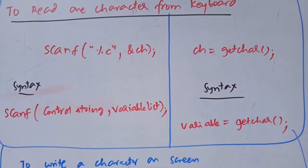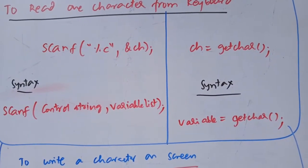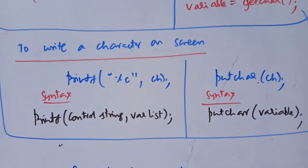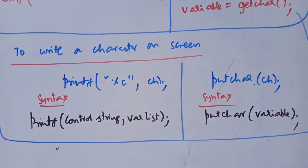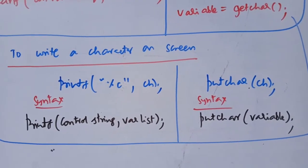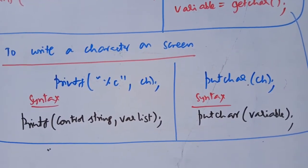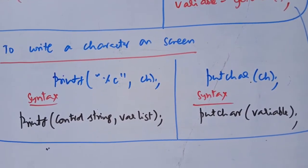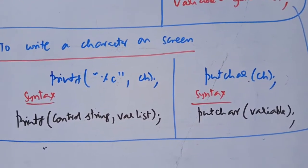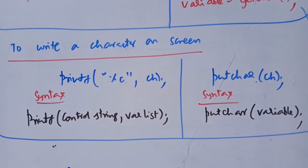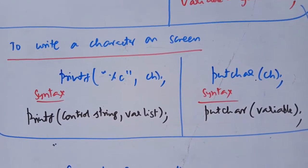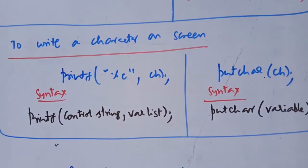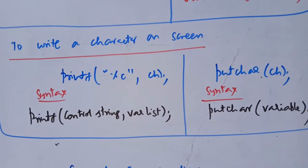We can use getchar and putchar as unformatted functions. To write a character on screen, we use the printf function as output. For character transactions, getchar handles input and putchar handles output. Putchar syntax uses a character variable within brackets. In scanf syntax, every variable requires the ampersand symbol, unlike printf.